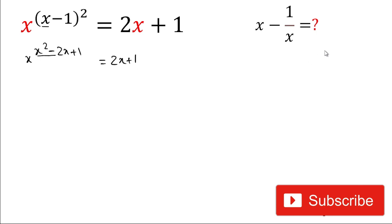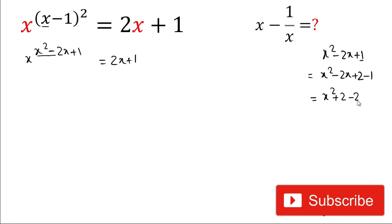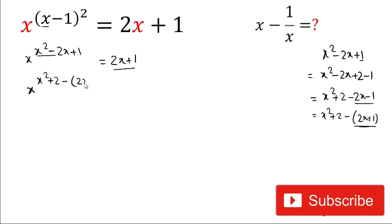Now we will make x²-2x+1 in the form of 2x+1. We have x²-2x+1, so we rewrite +1 as +2-1, then rearrange to get x²+2 minus (2x+1). We take minus from the last two terms, giving us x²+2 minus (2x+1), so we have got 2x+1 likewise.